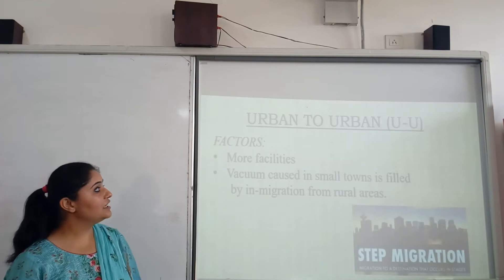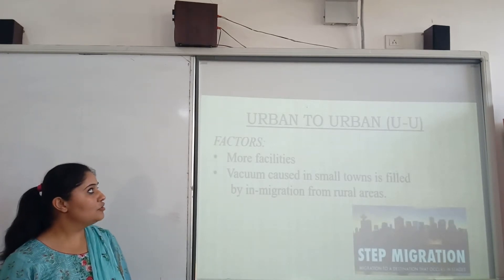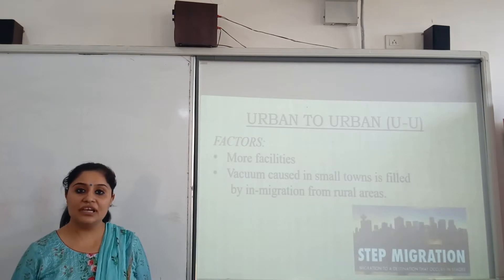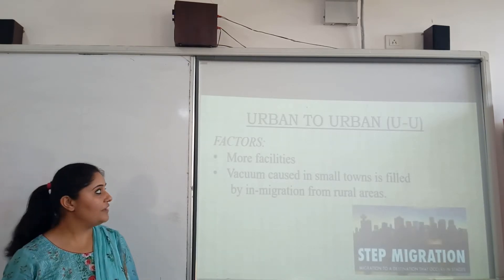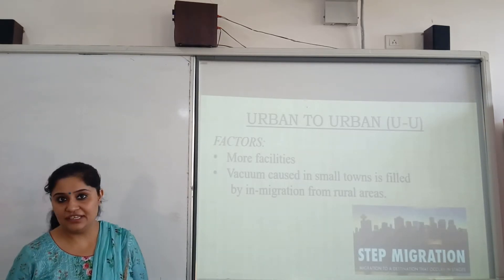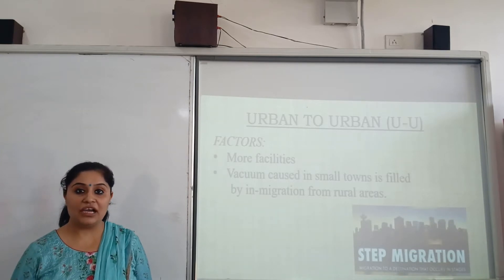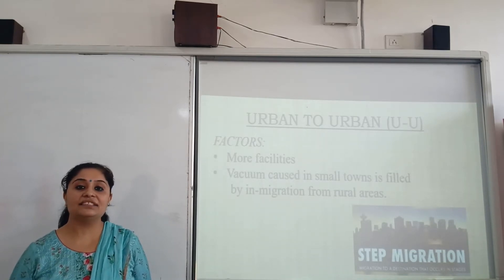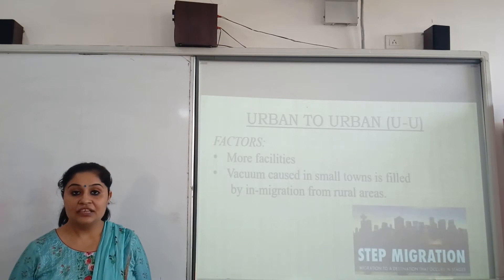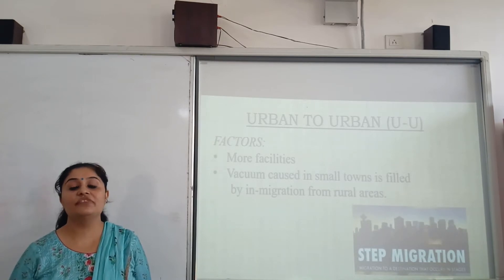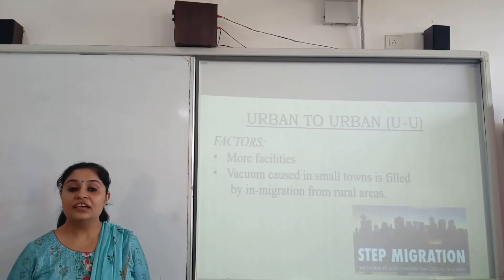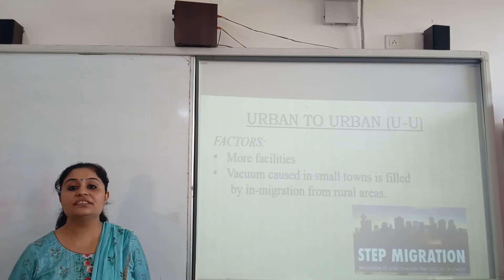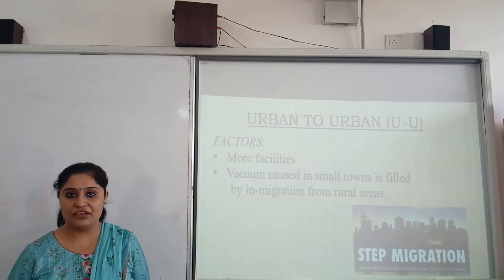Third is urban to urban migration. You must be wondering why do people migrate from one urban area to another urban area. The factors involved are more facilities — people in small towns with few facilities migrate to large cities with more facilities. This creates a vacuum in small towns, which is filled by people coming from rural areas. This is called step migration.